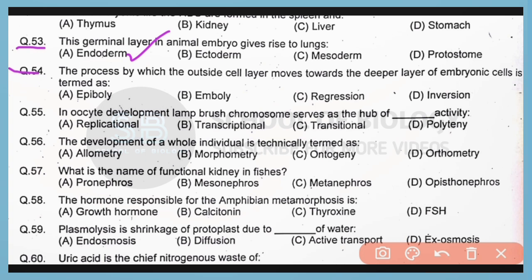Question number 54. The process by which the outside cell layer moves towards the deeper layer of embryonic cells is known as emboli. So correct answer is option B.